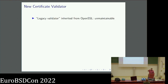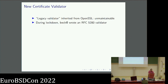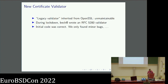Now, on to the new certificate validator. As I said, it's a complicated pathfinding algorithm. Complicated things tend not to have nice code in the codebase we inherited in 2014, and the old validator is pretty much unmaintainable — a huge spaghetti mess you just can't reason about. So during lockdown, Beck wrote a new one from scratch. As he likes to put it, he got COVID and lost his sense of smell, so he could dive into that. The initial code was pretty much correct. We only found a few minor bugs, which is normal for something complicated.